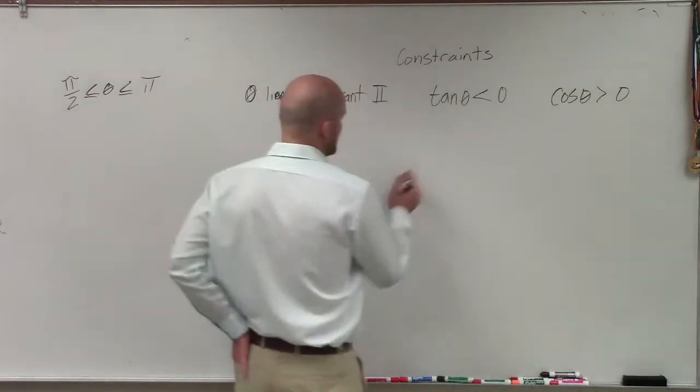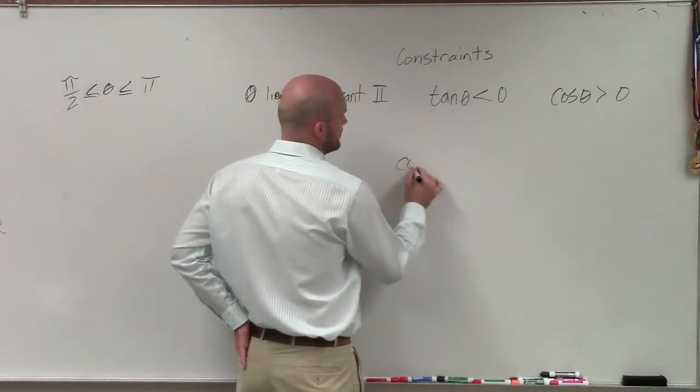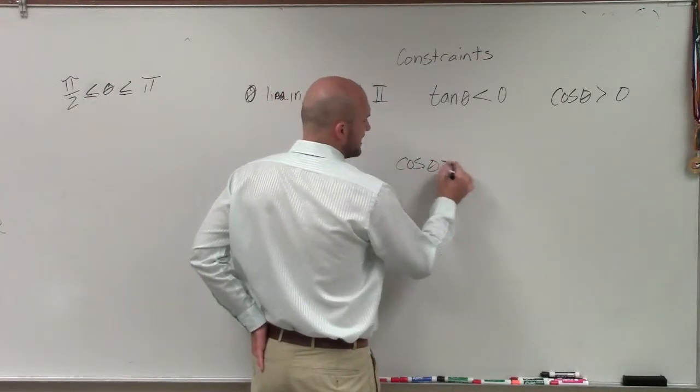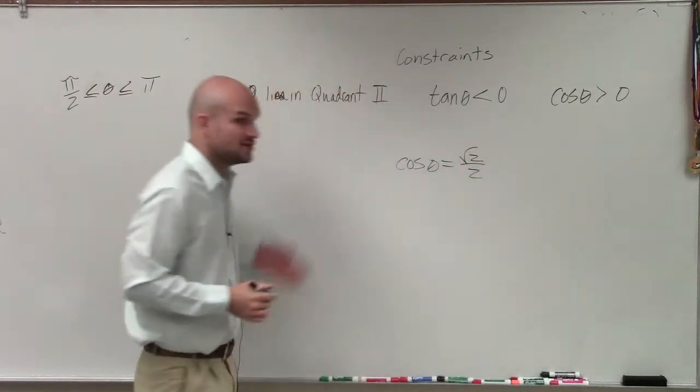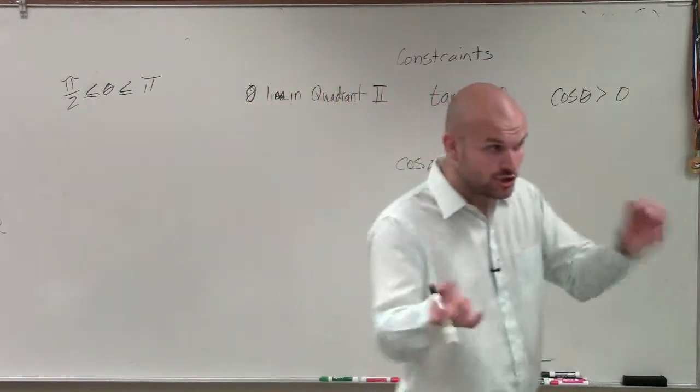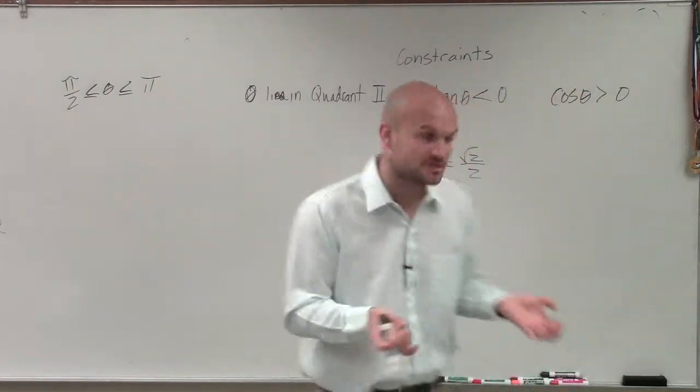But one thing I want you guys to understand is, remember, if we talked about cosine of theta when cosine of theta equals square root of 2 over 2, you guys understand when you look at the unit circle there's two points where cosine of theta equals square root of 2 over 2.